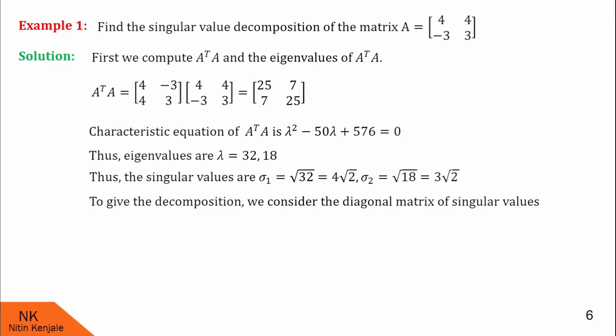Now, to give the decomposition, we consider the diagonal matrix of singular values. So sigma is the diagonal matrix with diagonal entries sigma 1 equal to 4 root 2 and sigma 2 equal to 3 root 2, with other entries as 0. I hope you understood this part.